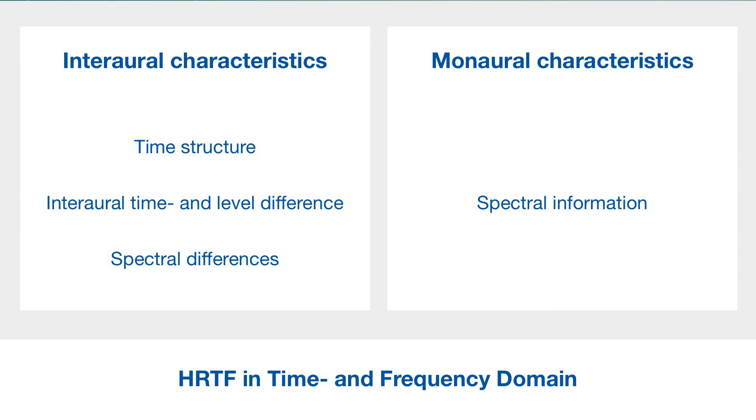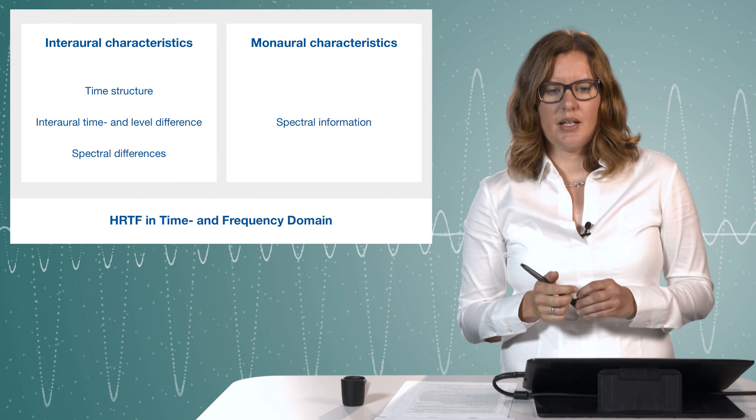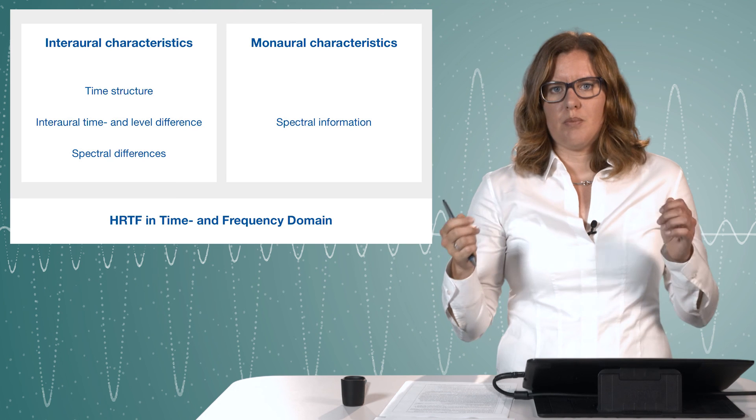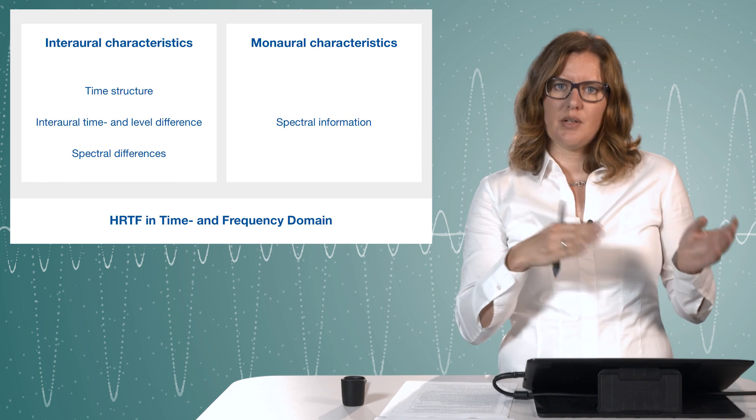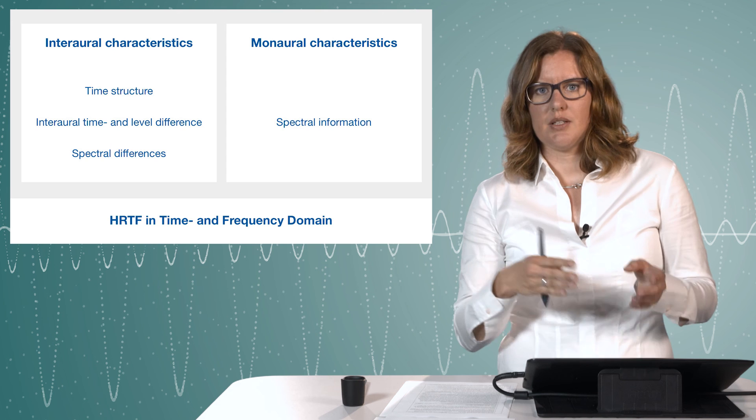To conclude, we have seen that when we measure a set of HRTF we see on the one hand interaural characteristics. We see this in time structure by the time delay between the left and the right ear signal. We see this also in frequency domain when we have a look into the level differences. So we have interaural time and level differences. But when we move the sound source to the frontal direction or somewhere in the median plane, we don't benefit from the left and right ear difference. We don't have any differences between the right and left ear. So we have only monaural characteristics we can see in the spectral information.